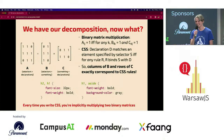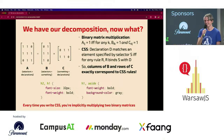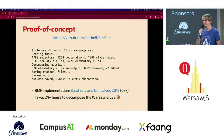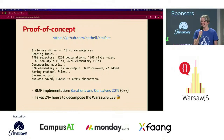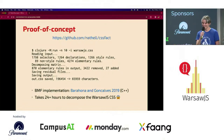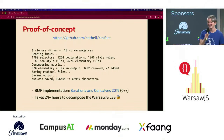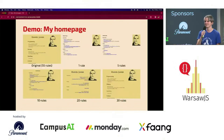So actually, every time you write CSS, you didn't know it, but you're implicitly multiplying two binary matrices. I've written a proof-of-concept tool that does this kind of thing. It actually takes a lot of time to decompose the warsawjs.com CSS — I ran it yesterday and it didn't complete in time. So instead, I'm going to demo how it looks on my homepage, which has only 55 CSS rules.